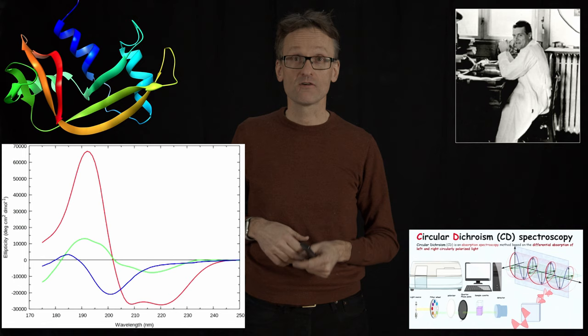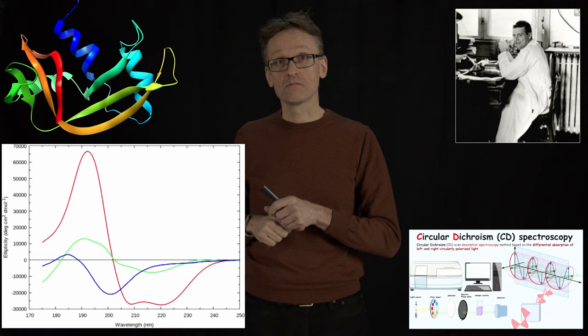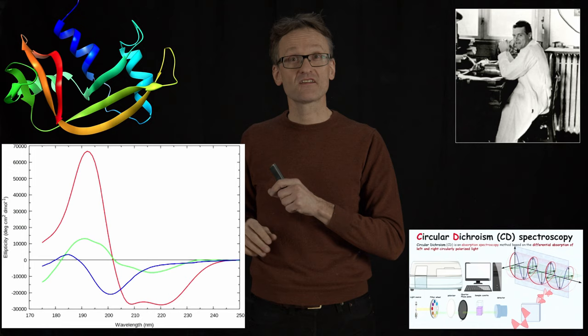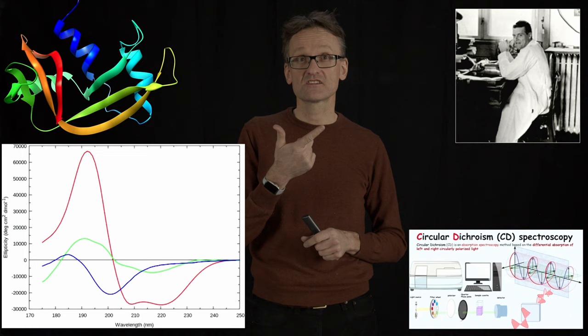In this particular case we're measuring the so-called ellipticity — that is, how much I'm turning the light — as a function of the frequency of the light on the x-axis. The red curve is alpha helix, the green curve is beta sheet, and the blue one is a coil. By looking at different wavelengths I can easily fit how much helix, how much sheet, and how much coil I have in my sample.